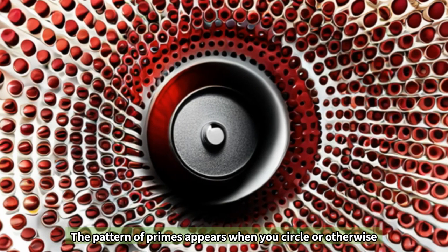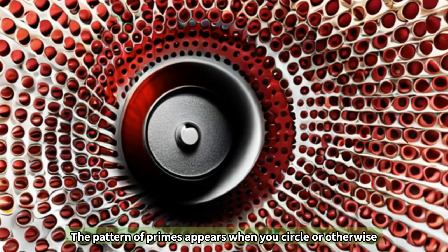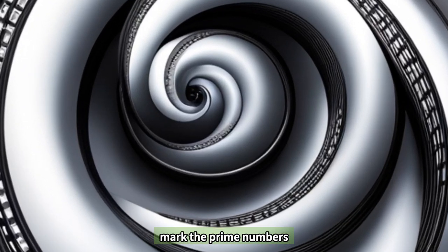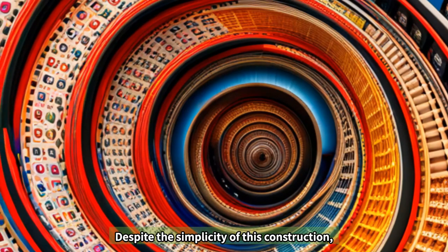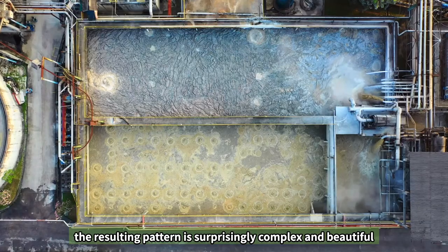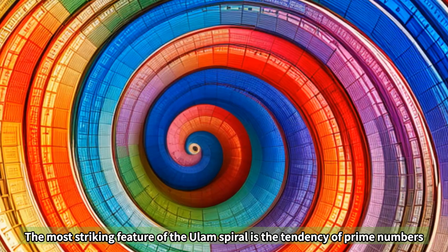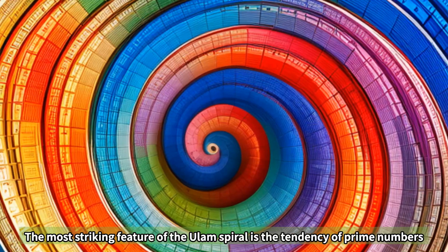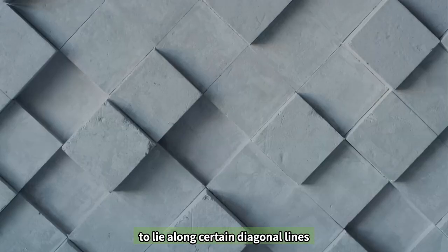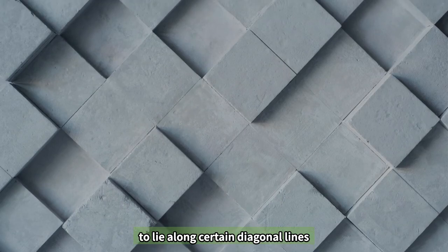The pattern of primes appears when you circle or otherwise mark the prime numbers. Despite the simplicity of this construction, the resulting pattern is surprisingly complex and beautiful. The most striking feature of the Ulam spiral is the tendency of prime numbers to lie along certain diagonal lines.